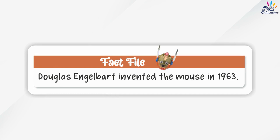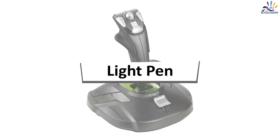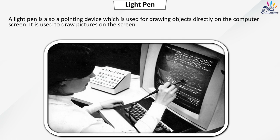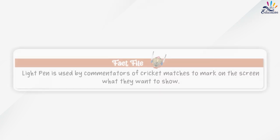Douglas Engelbart invented the mouse in 1963. A light pen is also a pointing device which is used for drawing objects directly on the computer screen. It is used to draw pictures on the screen.